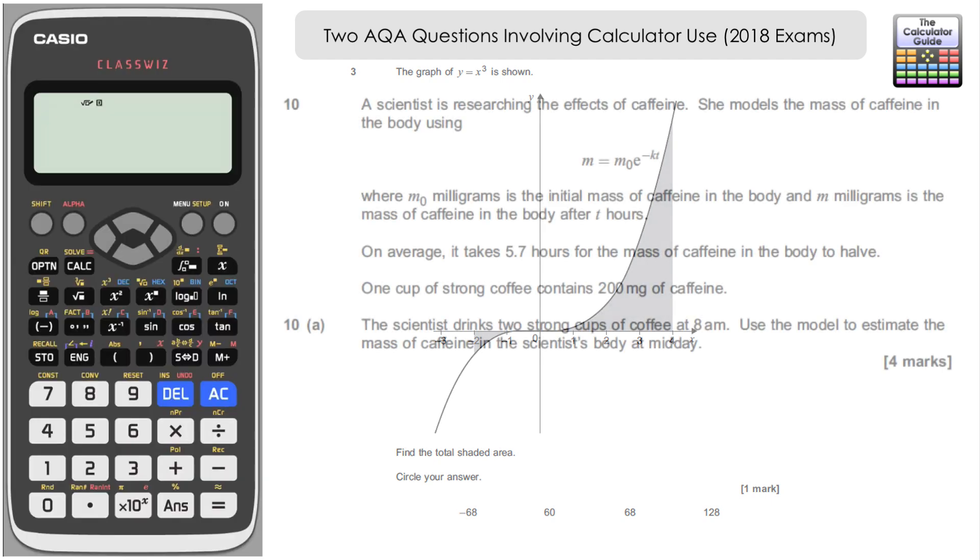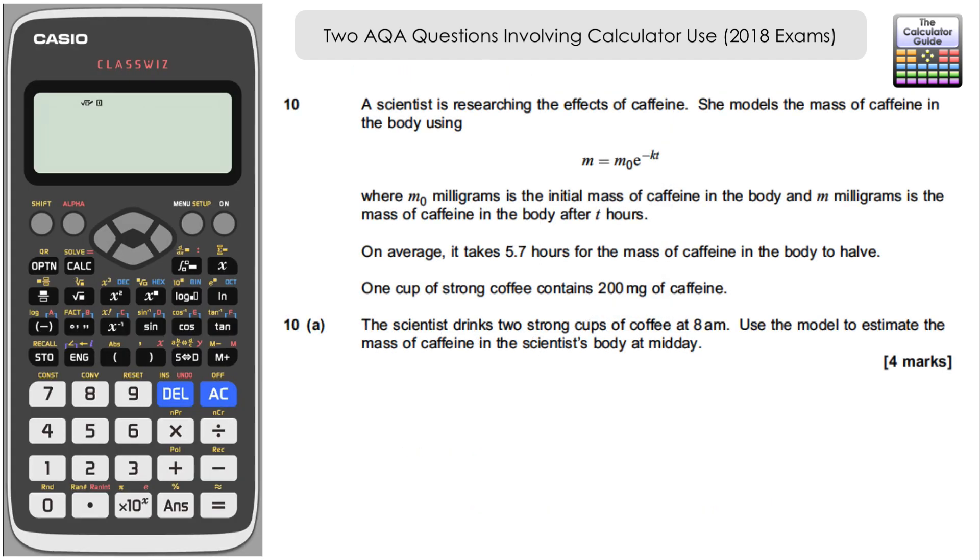The second question is from paper one from the summer 2018 exam series from AQA, this is question 10. We've got a scientist researching the effects of caffeine. She models the mass of caffeine in the body using m = m₀e^(-kt). m₀ milligrams is the initial mass of caffeine in the body and m milligrams is the mass of caffeine in the body after t hours on average. It takes 5.7 hours for the mass of caffeine in the body to halve. One cup of strong coffee contains 200 milligrams of caffeine. This is split into three parts.